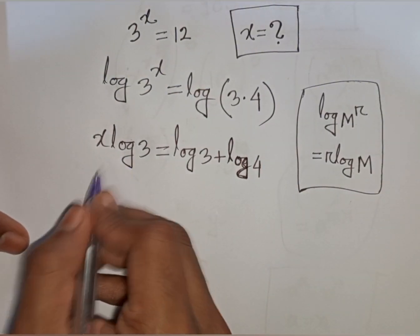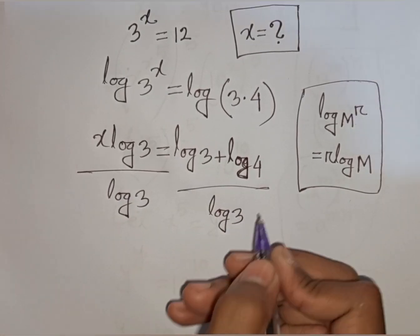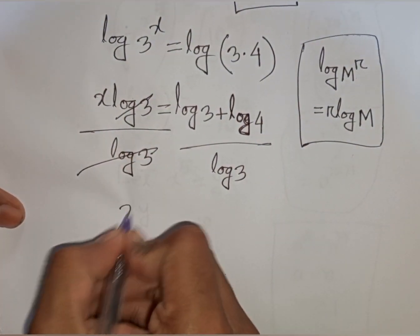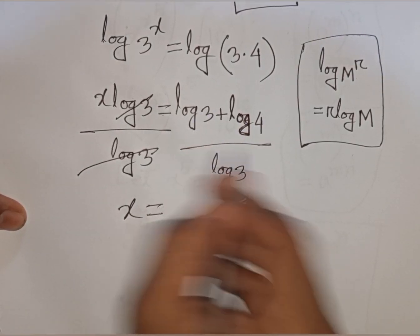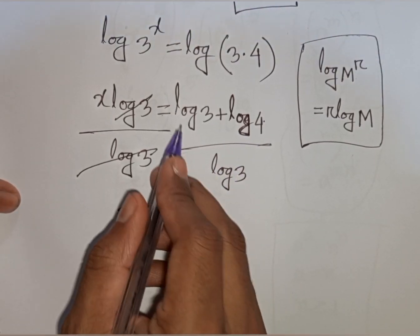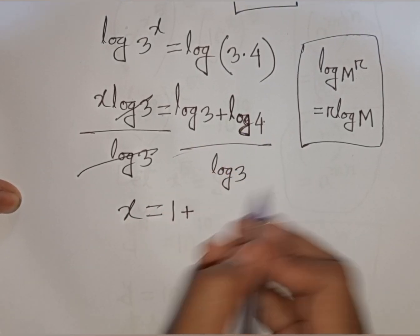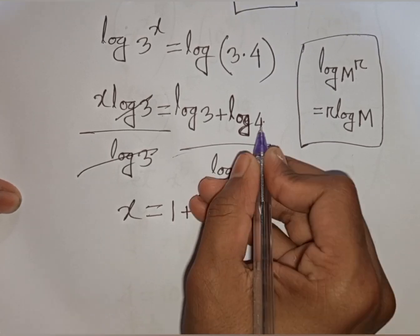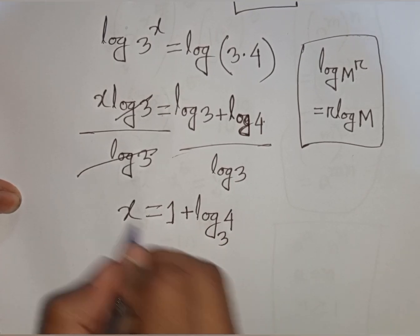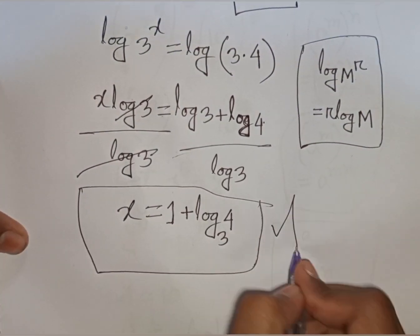We need the value of x, so divide both sides by log 3. This log 3 cancels on the left side, giving x = log 3 / log 3 + log 4 / log 3, which equals 1 + log 4 / log 3. Using the change-of-base formula, this is 1 + log_3(4). So x = 1 + log_3(4) is our final answer.